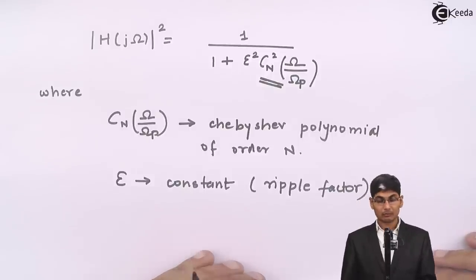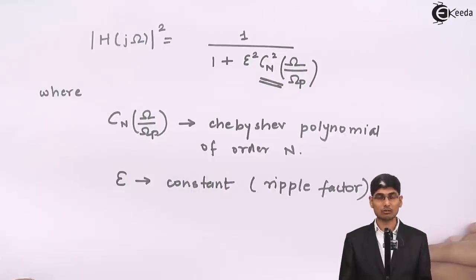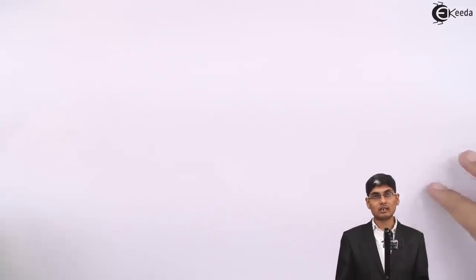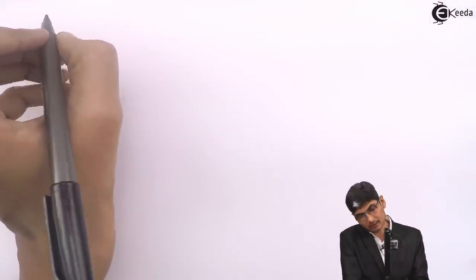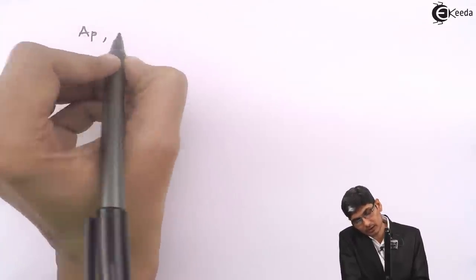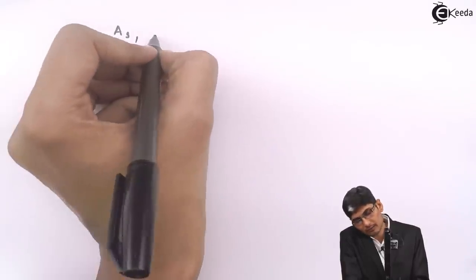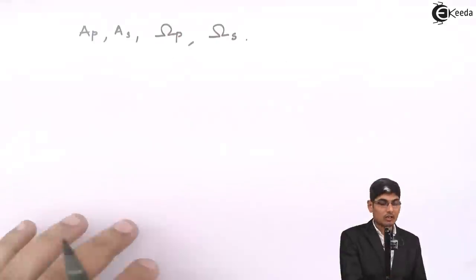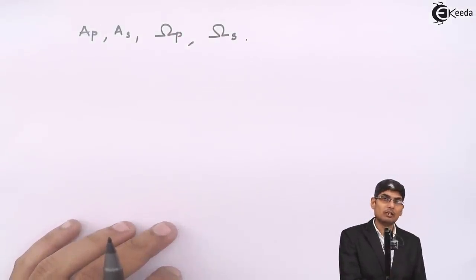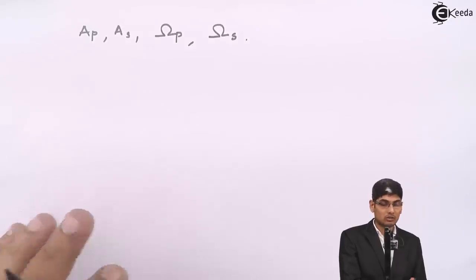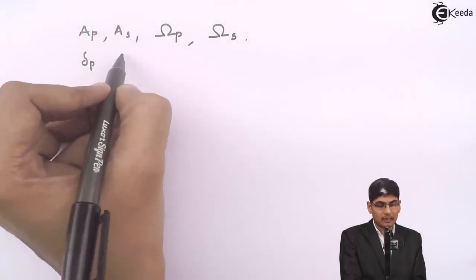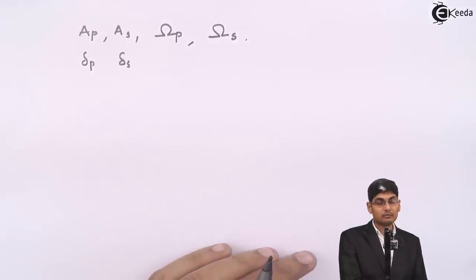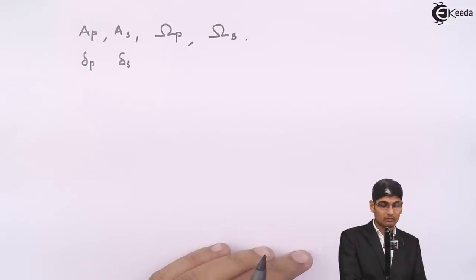Now let us look at the design equations for a Type 1 Chebyshev filter. The design parameters given to us are: attenuation in the passband (ap), attenuation in the stopband (as), and the radian frequencies omega_p and omega_s. These attenuations can be given in dB — written as ap and as — or in normal (linear) scale, in which case we write delta_p and delta_s.